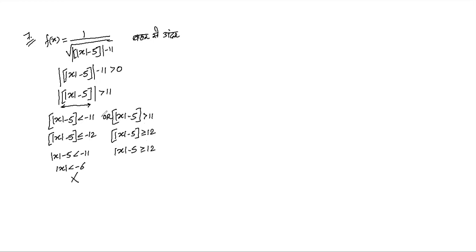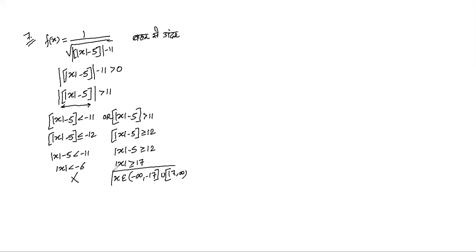Since mode cannot be less than -6, that side is rejected — nothing comes from it. Solving the right case: mode x comes out ≥ 17. For any number whose mode is ≥ 17, it lies in (-∞, -17] ∪ [17, ∞). That is our answer.